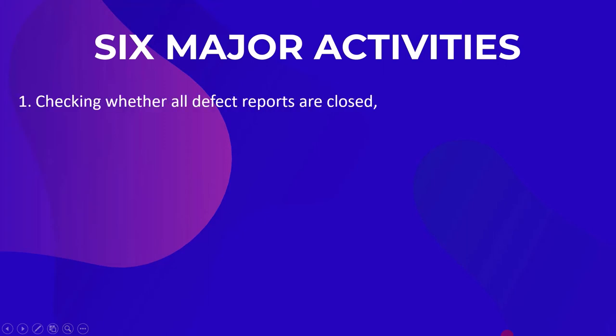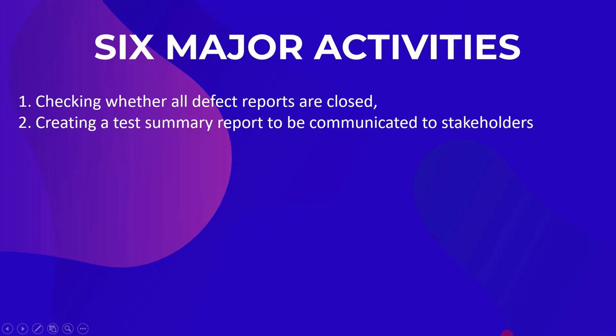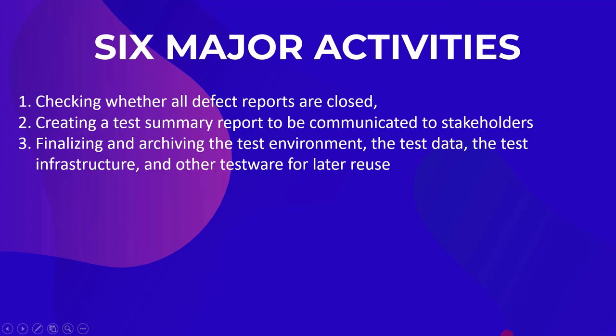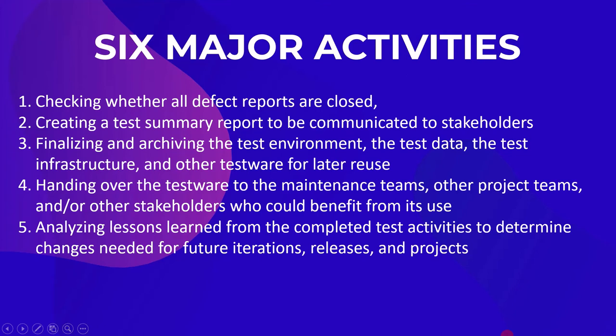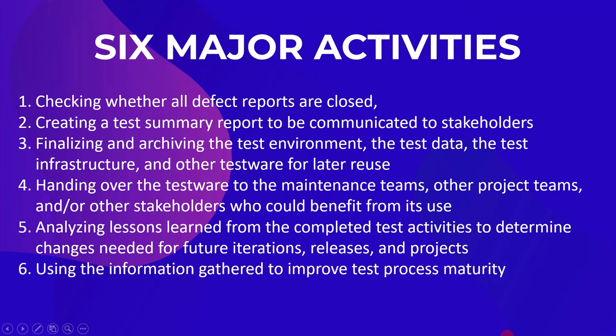The first activity is checking whether all defect reports are closed. The second activity is creating a test summary report to be communicated to stakeholders. The third activity is finalizing and archiving the test environment, the test data, the test infrastructure, and other testware for later reuse. The fourth activity is handing over the testware to the maintenance teams, other project teams, and other stakeholders who could benefit from its use. The fifth activity is analyzing lessons learned from the completed test activities to determine changes needed for future iterations, releases, and projects. The sixth activity is using the information gathered to improve test process maturity.